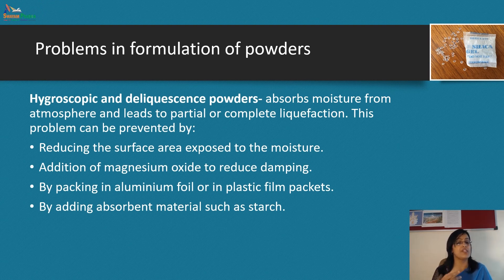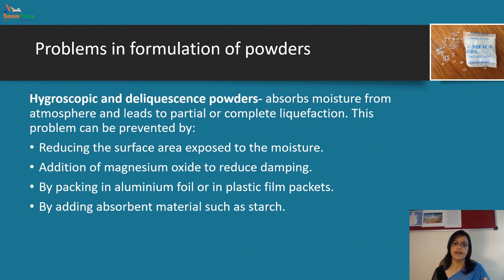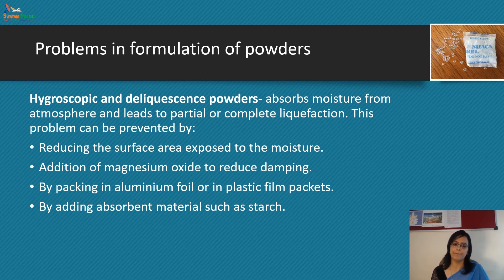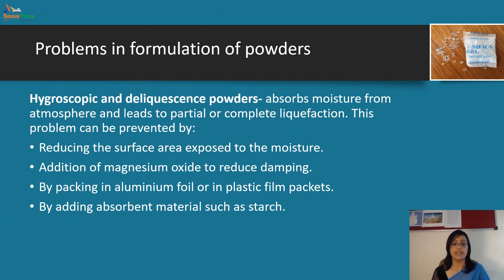Addition of magnesium oxide is used to prevent damping — meaning the formation of a damp mass. Packing in aluminum foil or in plastic film packets protects from the outer environment. Adding absorbent material such as starch also provides remedial measures while formulating hygroscopic and deliquescent powders.